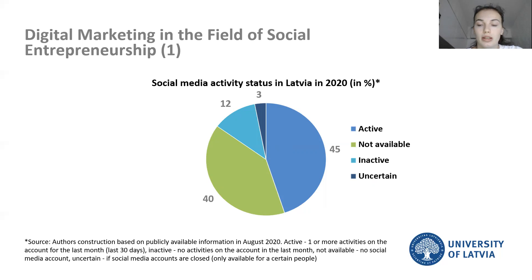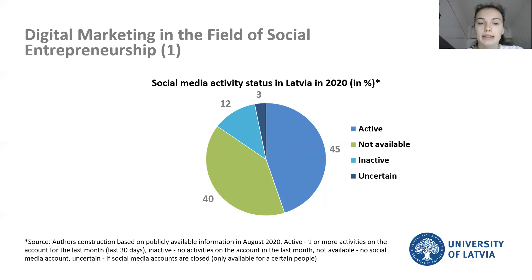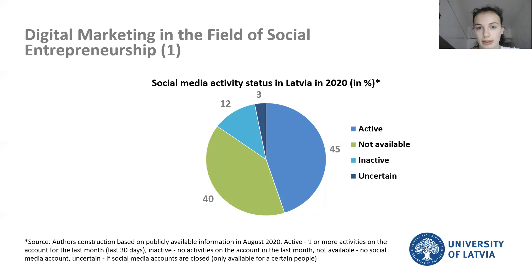There is also a large part of enterprises that do not have social media accounts at all — it is 40%, or 47 companies out of 117. Some enterprises create closed or private accounts where only people of a certain community can see the contents, and in this research that is 3%. So basically, 3% of companies cannot be publicly seen in the social environment.